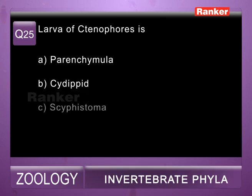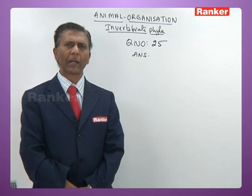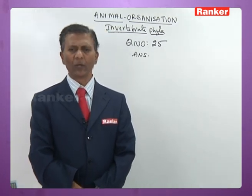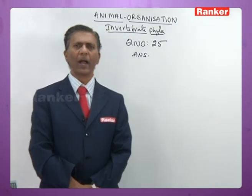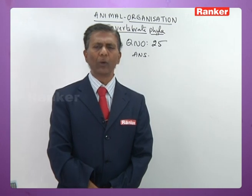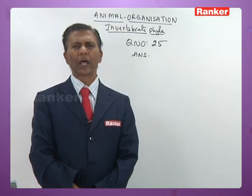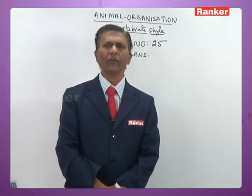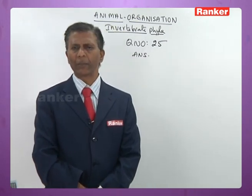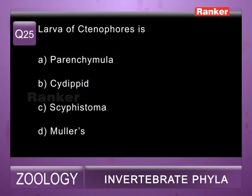Twenty-fifth question: larva of ctenophores — a) parenchymula (larva of poriferans), b) cydippid (larva of ctenophores), c) scyphistoma (larva of jellyfish/Scyphozoa), d) Müller's larva (larva of Platyhelminthes, specifically polyclads of Turbellaria). So the answer for twenty-fifth question is b) cydippid.